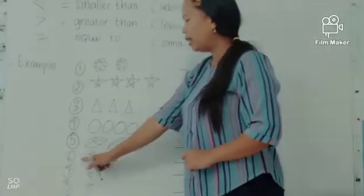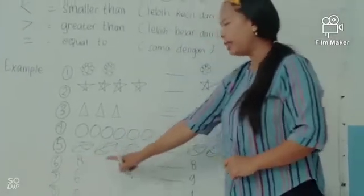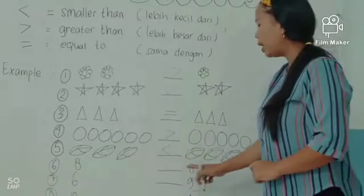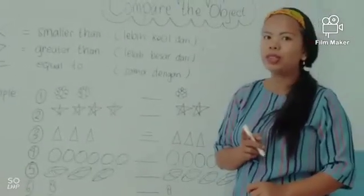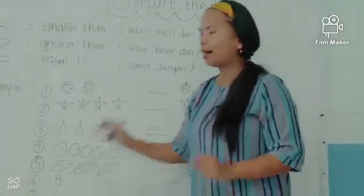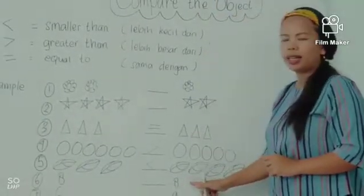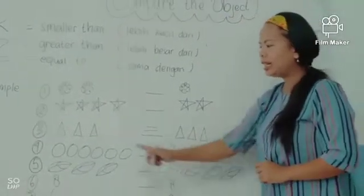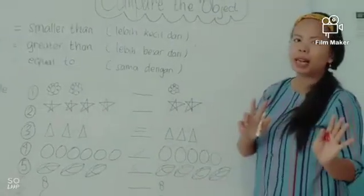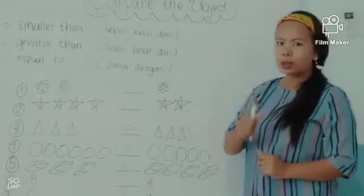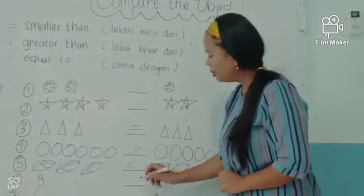Number six — the number is eight. In the left side, there are eight, and in the right side, there are eight. Di kiri ada delapan, di kanan ada delapan. Mereka sama-sama delapan. So the symbol is equal.